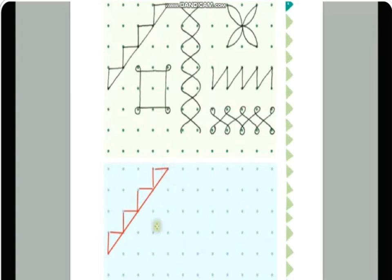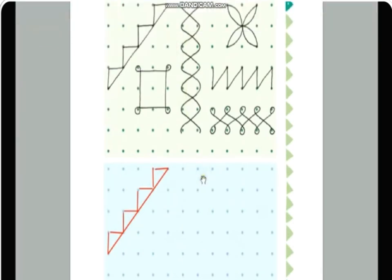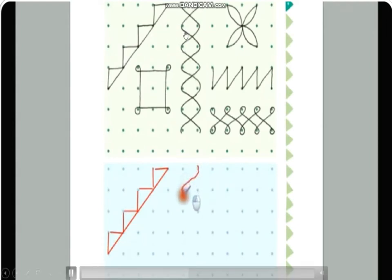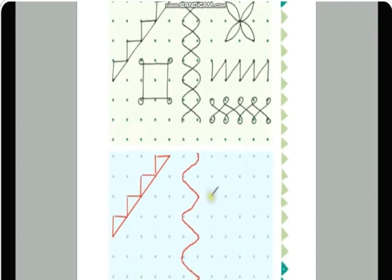Now I will draw the curved lines. See how I'm drawing — I start from the next dot and show how the curved lines go. Open your maths book to page number four and complete this exercise — you can do it along with me. One curved line is already drawn; now I will start the next one.